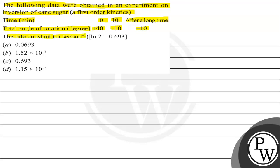The rate constant in per second, ln 2 is equal to 0.693. And these are the options given to us. So basically, in this question, we will find out the rate constant.